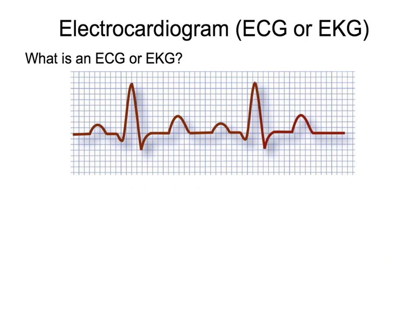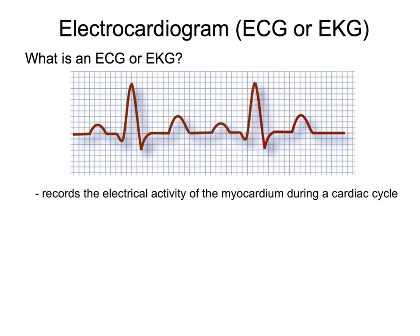Because cardiac muscle can conduct and transmit an electrical impulse, we can measure and view that electrical activity through something called an electrocardiogram. An electrocardiogram records the electrical activity of the myocardium during a cardiac cycle, and can be broken up into different waves and complexes.